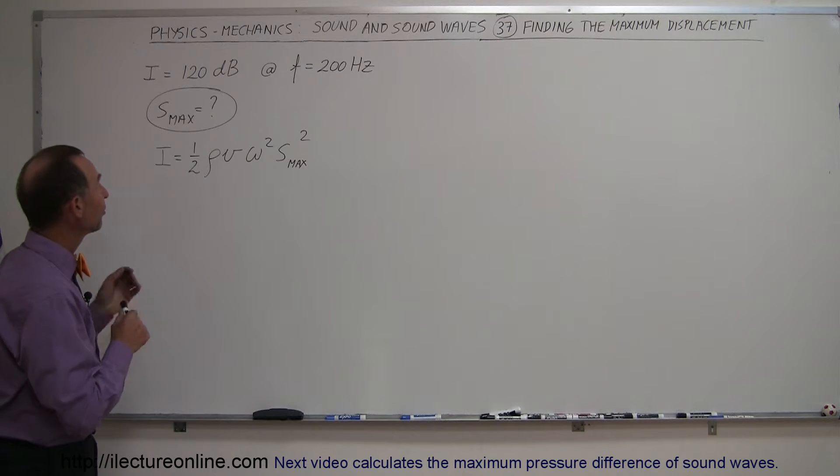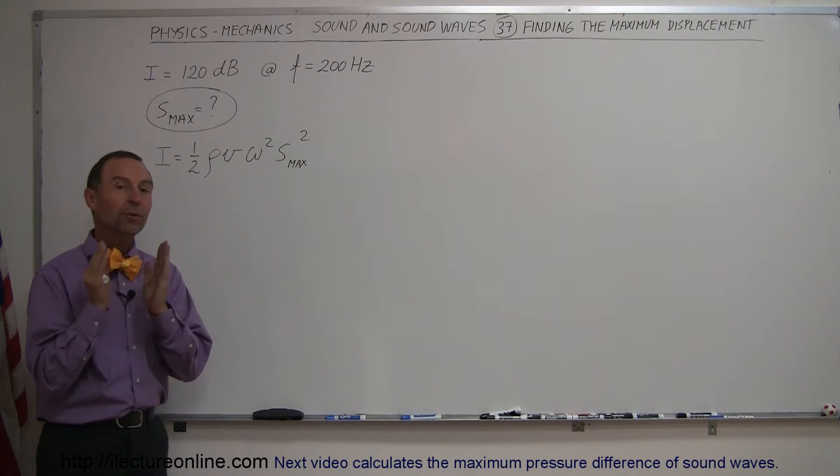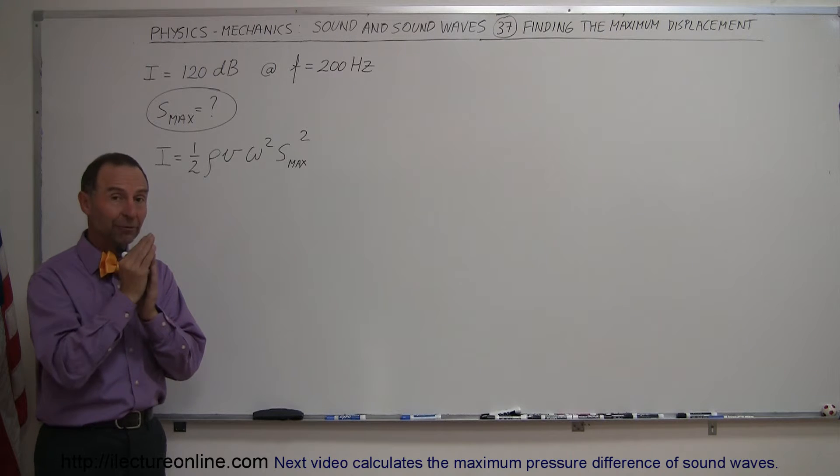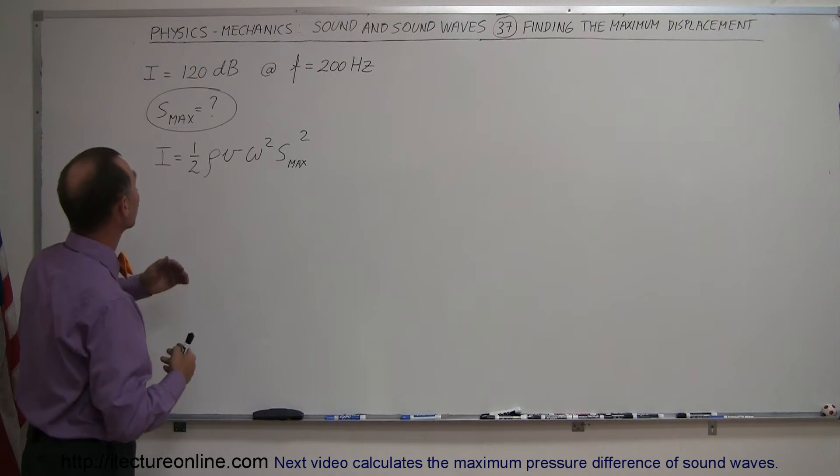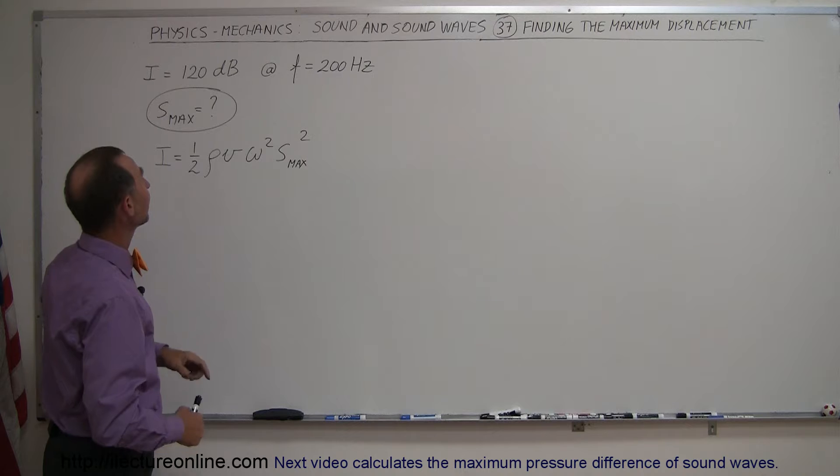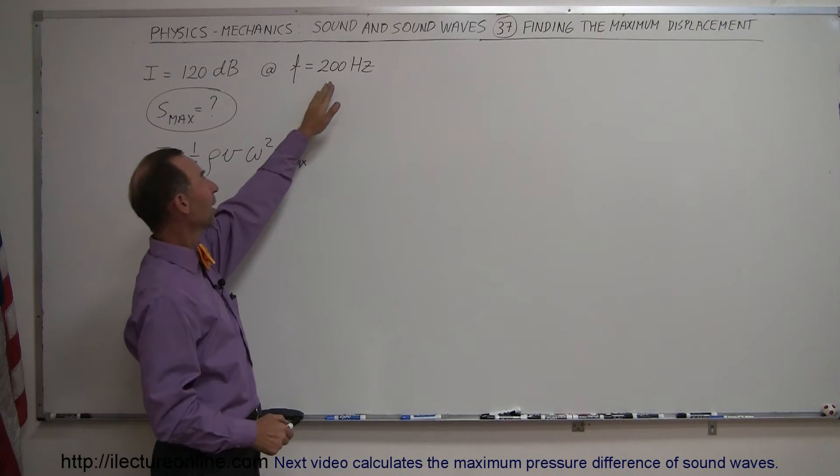What we're going to do in this video is find the maximum displacement of the air molecules as they're vibrating back and forth. The sound is traveling from a source where the intensity is 120 decibels and the frequency of the sound is 200 hertz.